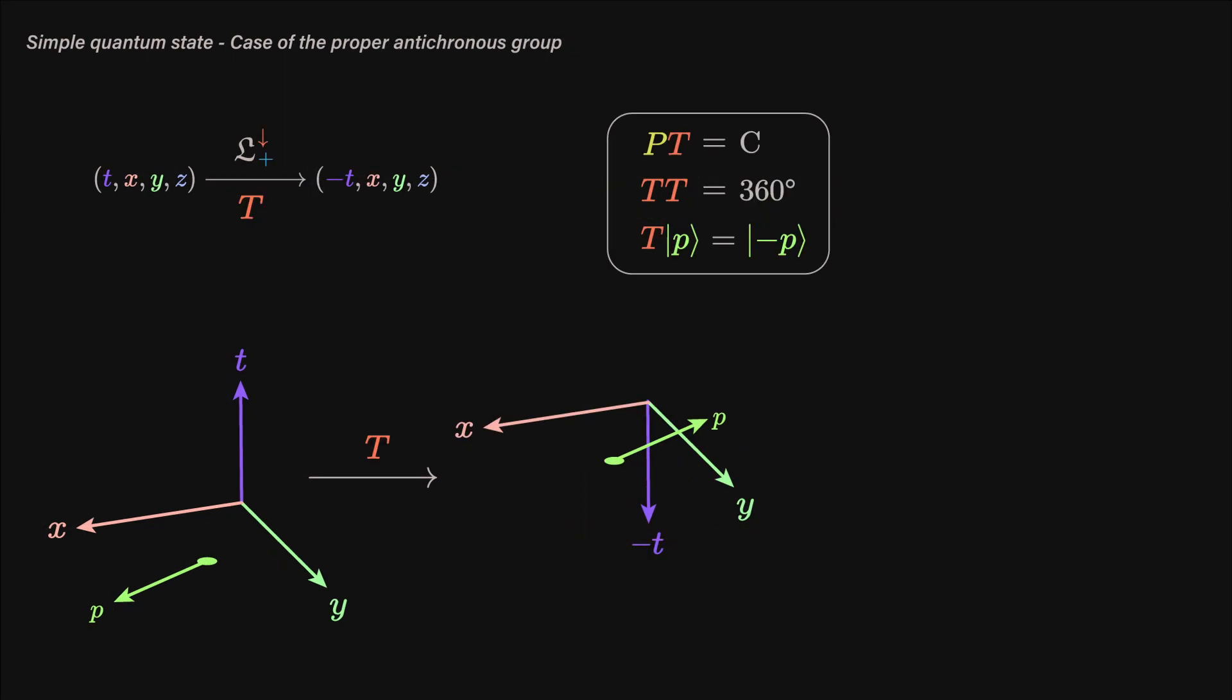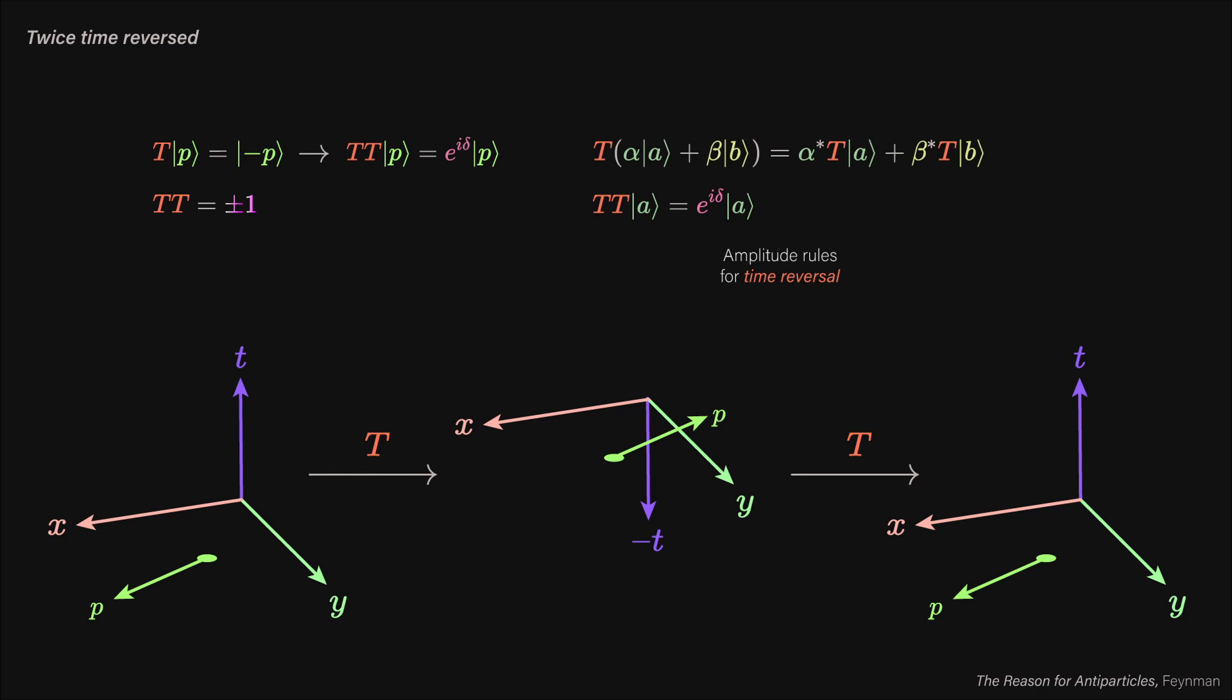It is observing the antichronous transformations that things get interesting. By applying a proper antichronous transformation, we flip time like a mirror and retain the spatial directions. We will call this T, the time reversal operator. Our basic results are that time reversal twice is equivalent to rotating something by 360 degrees, and applying a parity and time reversal operation is equivalent to the charge conjugation operation.